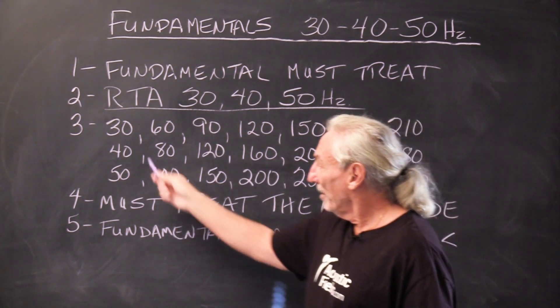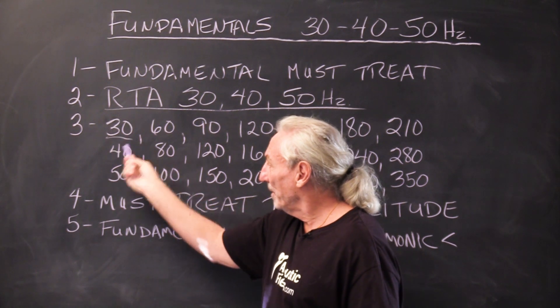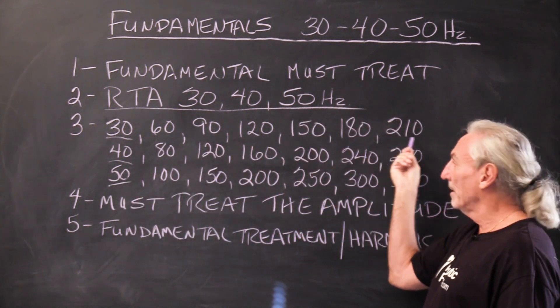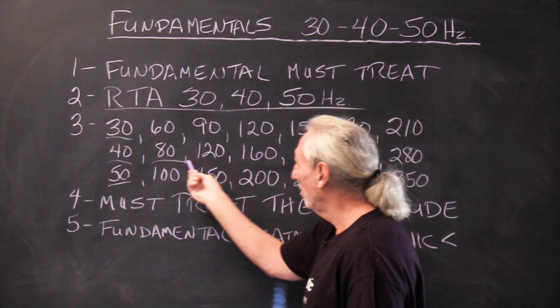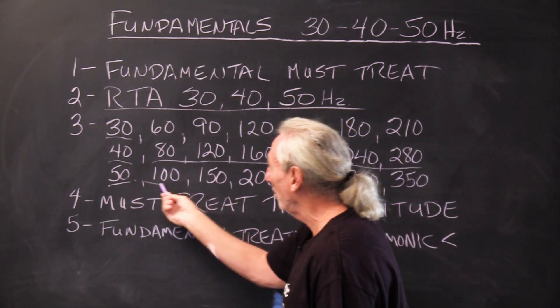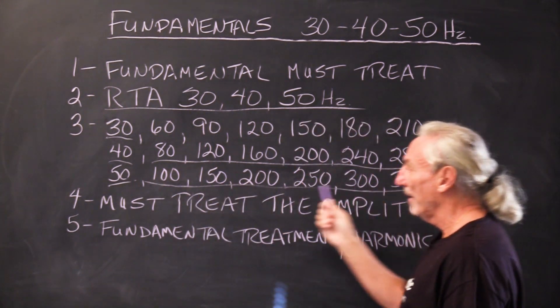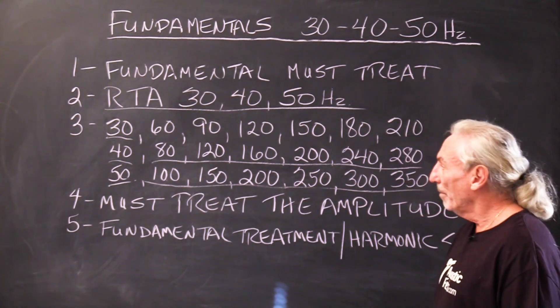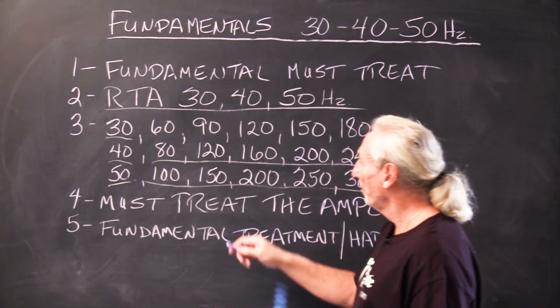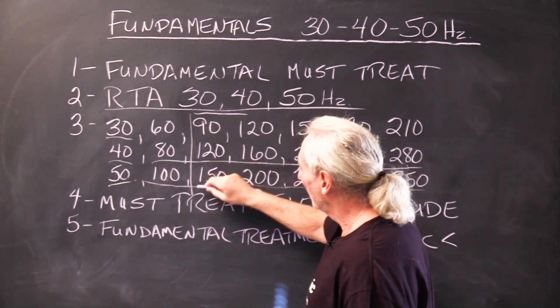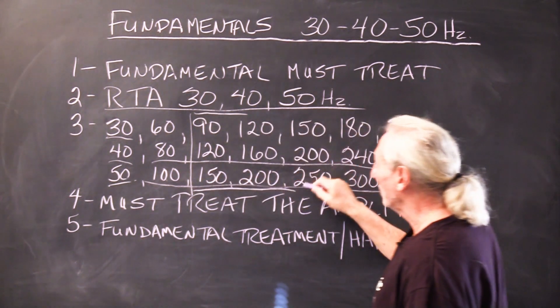So we know 30, 40, and 50 cycle fundamentals produce these harmonics. I won't walk through each one, but I think you all get the idea. All we do to create the harmonic is we double the fundamental each time. Well, as we can see here, we're starting even right away to get into mid-range frequencies.